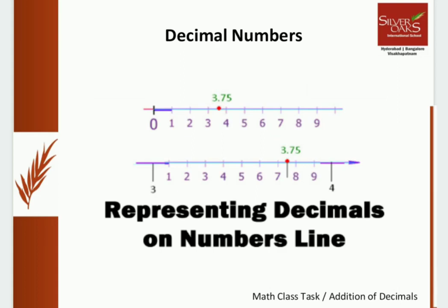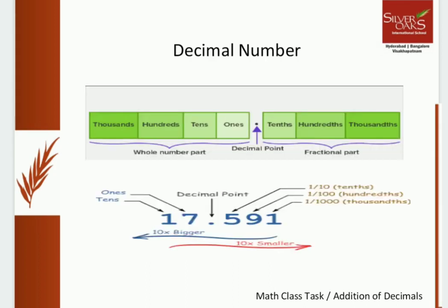Have you observed the dot between 3 and 75? This is called the decimal point. The left side of the decimal point is a whole number. The right side of the decimal point represents the decimal part.